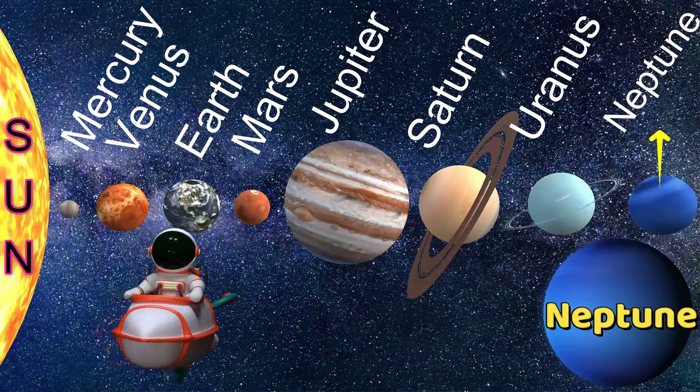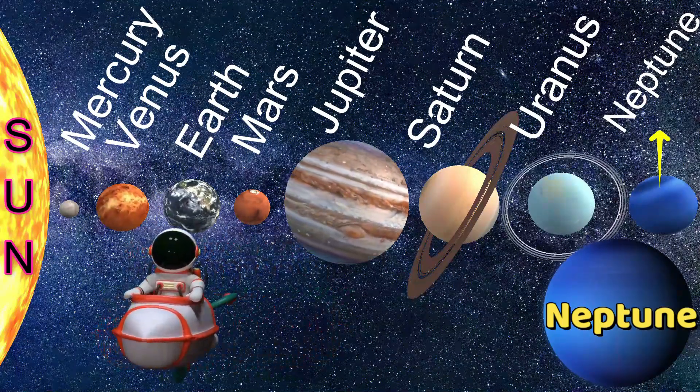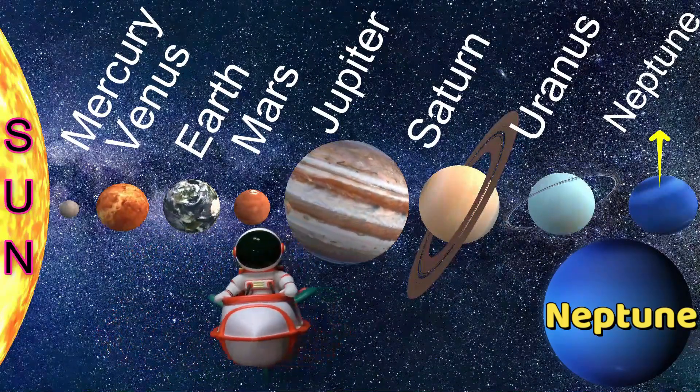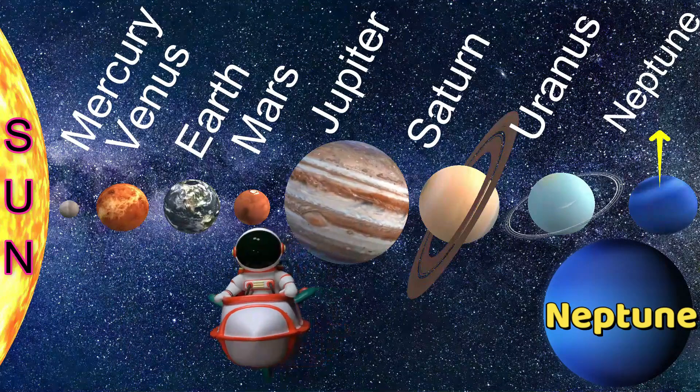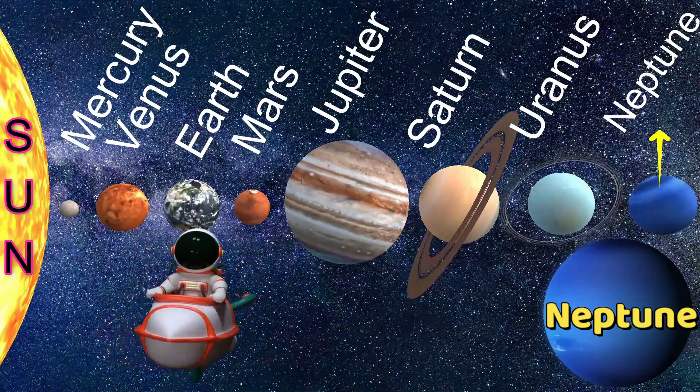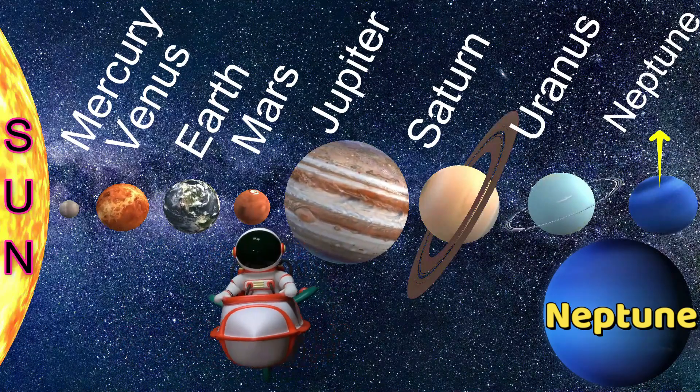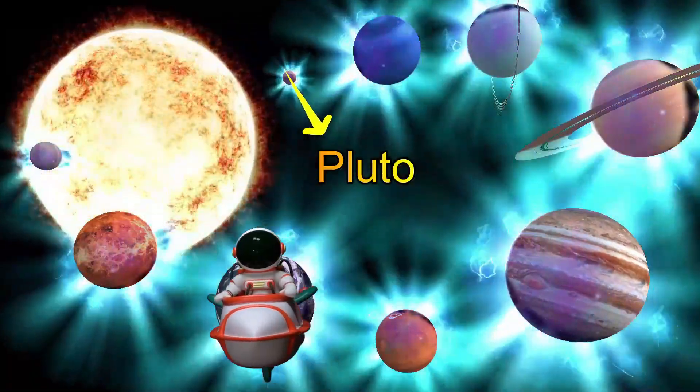Next planet, Neptune, the farthest planet from the sun. It is also known as ice giant. It is bluish color because of methane. Fourth largest planet and the third most massive planet in the solar system.